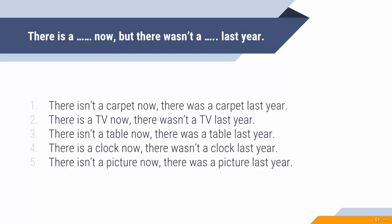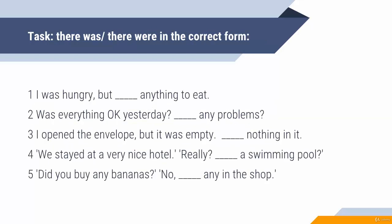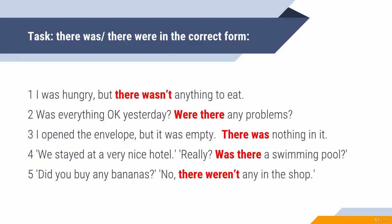As an extra exercise, choose a room in your flat or house where you live and imagine how it was — or just remember how it was. Then write down five sentences: now and before. Next exercise — the correct forms: there was, there were. For example: I was hungry, but there wasn't anything to eat.